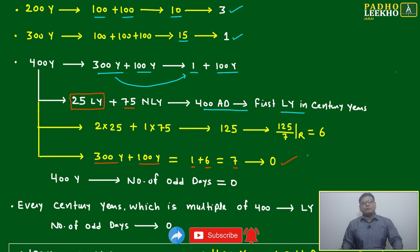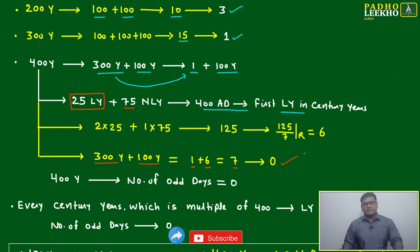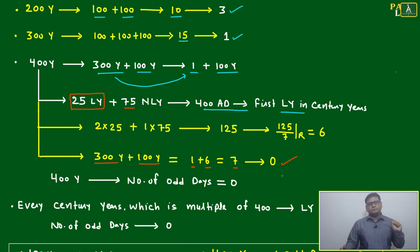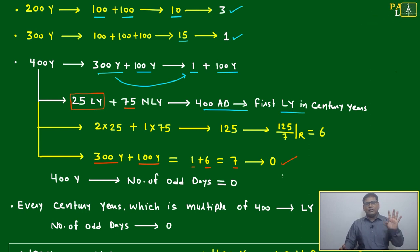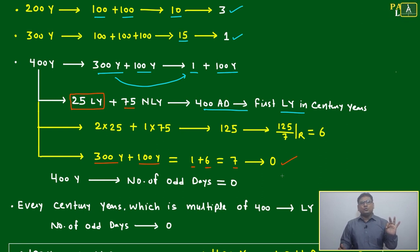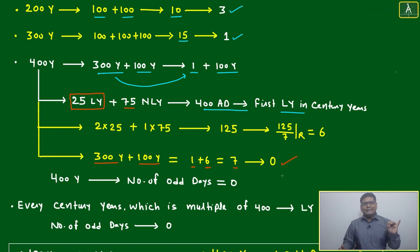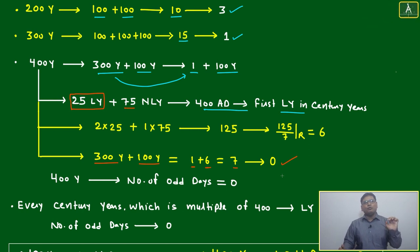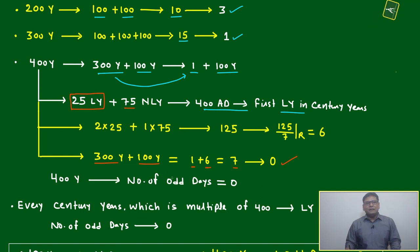300 years has 1 odd day; last 100 years has 6 odd days. Total for 400 years: 1 + 6 = 7, and 7 ÷ 7 = 0 remainder. So 400 years has 0 odd days. Summary of figures to keep in mind: non-leap year = 1, leap year = 2, 100 years = 5, 200 years = 3, 300 years = 1, 400 years = 0.